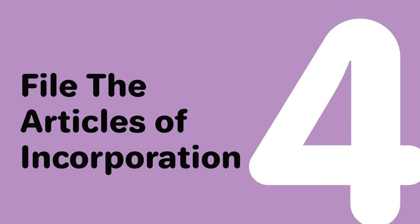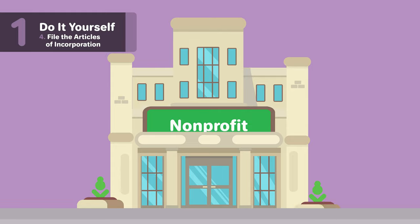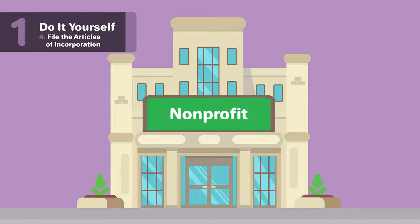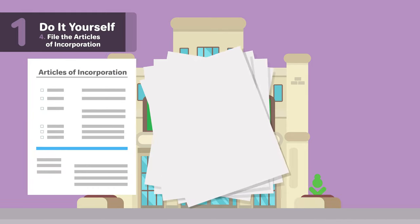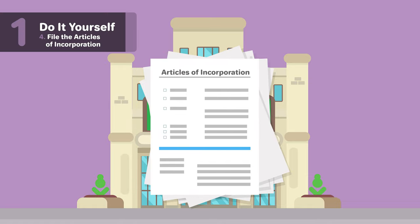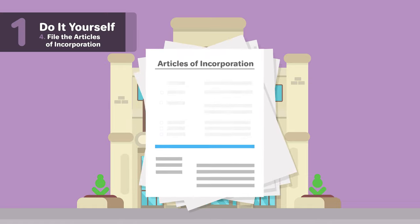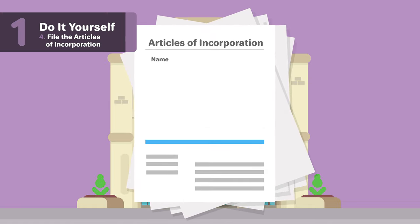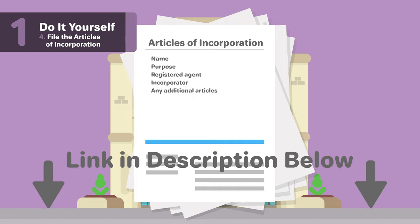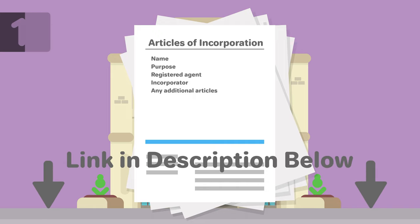Four: file the Articles of Incorporation. To form a nonprofit corporation, you will need to file official papers with Michigan. In Michigan, this is called the Articles of Incorporation. Some possible information you may have to include is name, purpose, registered agent, incorporator, and any additional articles. For more information on the sections of Michigan's Articles of Incorporation, check out our page linked below.